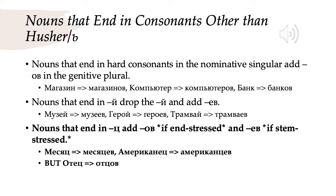Where things get complicated is with nouns that end in -ц. Because of the five-letter spelling rule, with these nouns we have to know where the stress is to add the correct ending. If they are end-stressed, we will add -ов, just like any other hard consonant noun — so отец becomes отцов. However, if they are stem-stressed, we can't write -о- after that -ц, and we will write -ев. So месяц, month, becomes месяцев; американец, American man, becomes американцев.